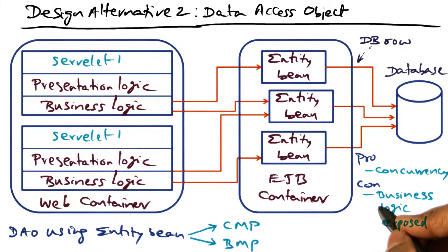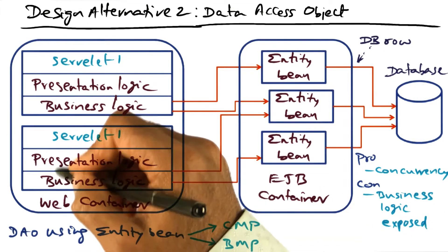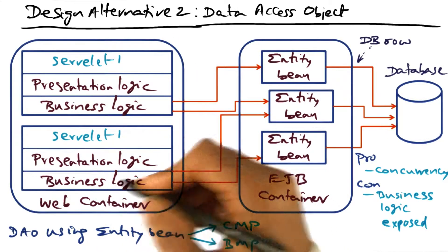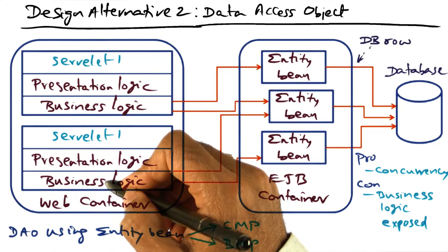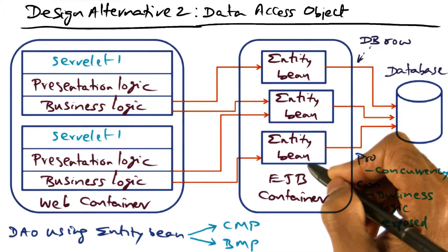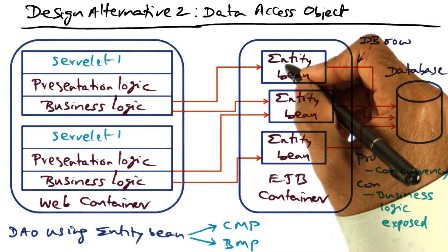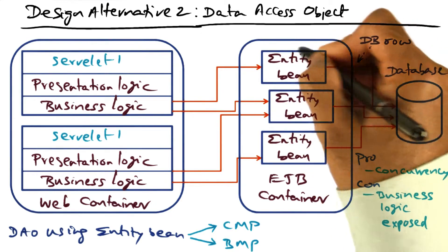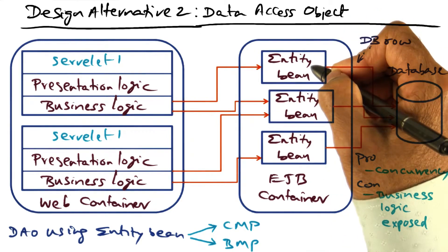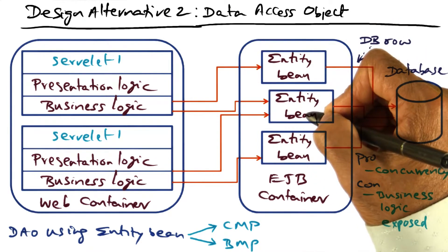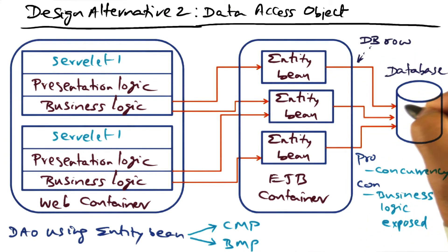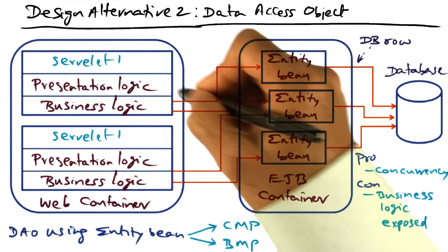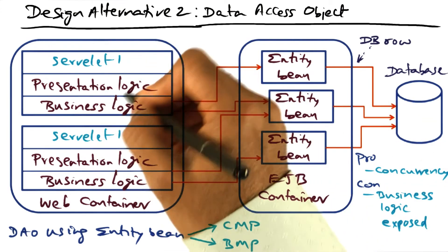There is one con to this approach: because we moved the business logic into the web container rather than keeping it in the EJB container, it exposes the business logic to the outside network — it is not confined to the corporate network. All the data access code that used to be in the session bean is now moved into the entity bean, giving us parallelism through multiple entity beans accessing different portions of the database concurrently, reducing the latency for the business logic to gather all needed data.